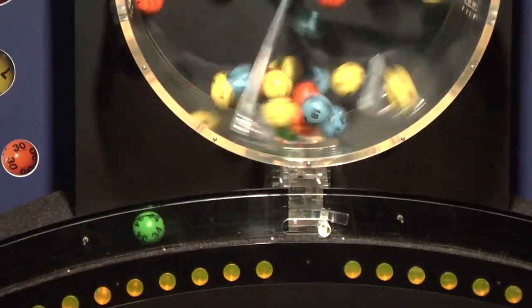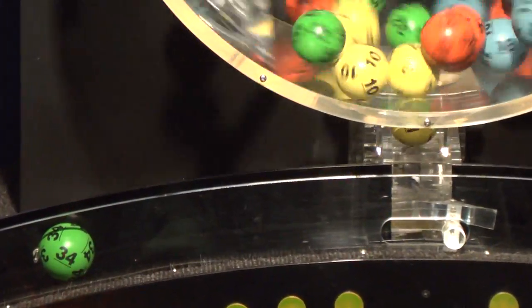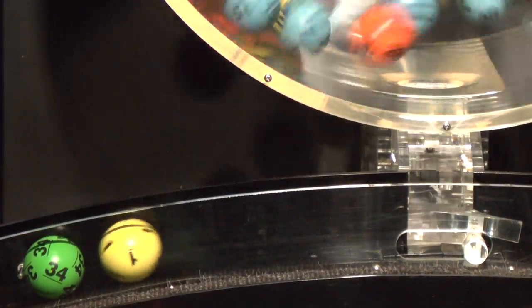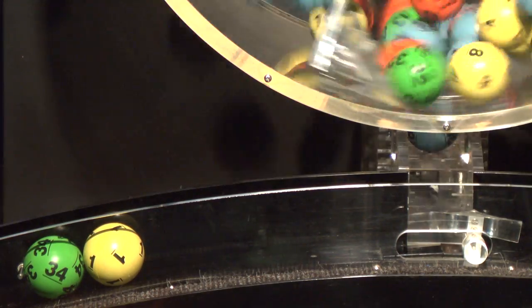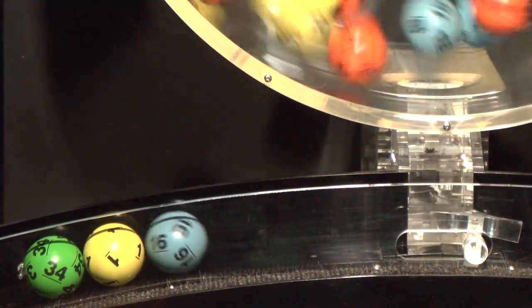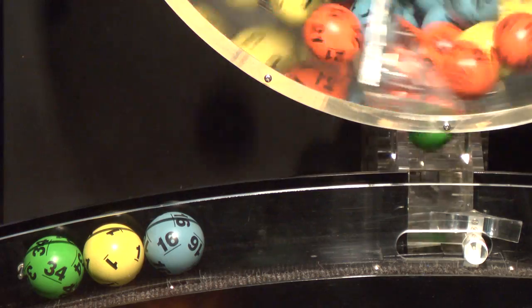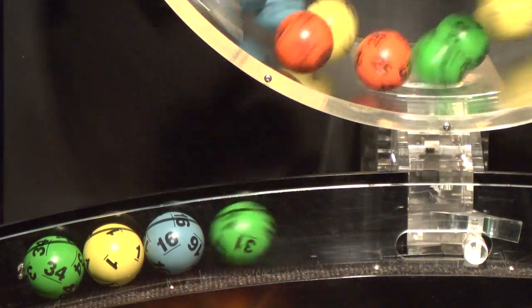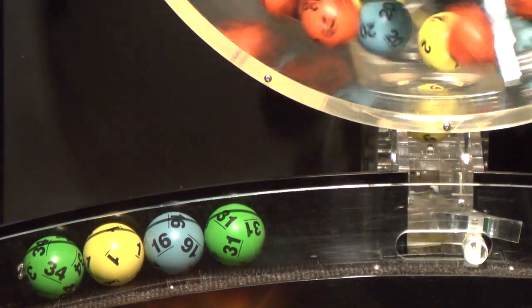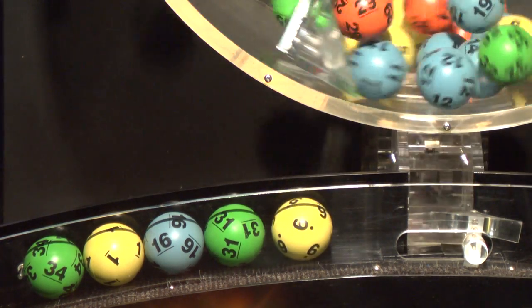That first number is 34. Behind that, one, followed by 16. If you match these three numbers, you've already won a prize. Here comes 31 and finally six.